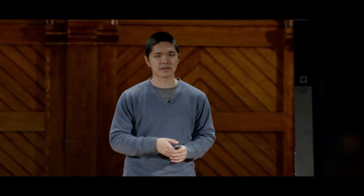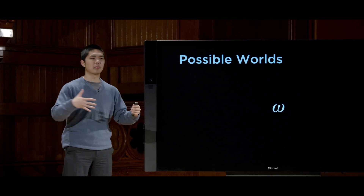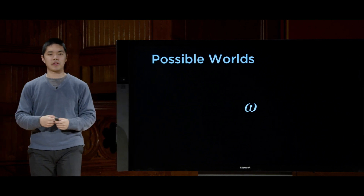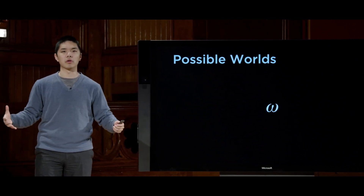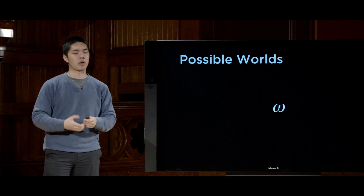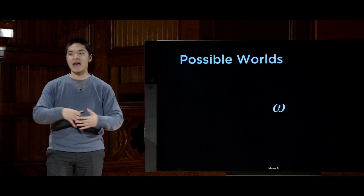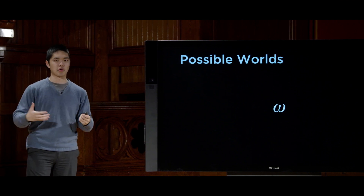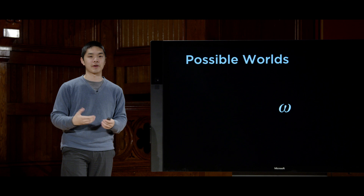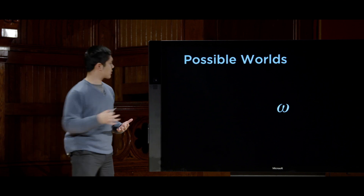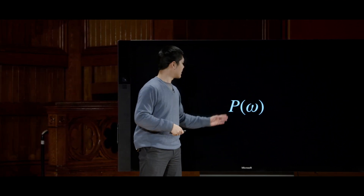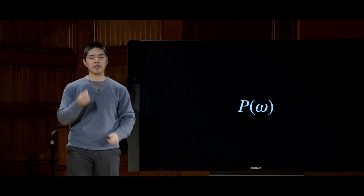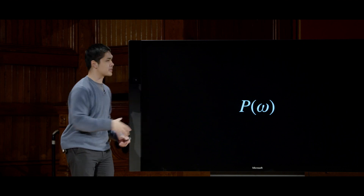Probability ultimately boils down to the idea that there are possible worlds, represented using the Greek letter omega. When I roll a die, there are six possible worlds that could result: I could roll a 1, 2, 3, 4, 5, or 6. Each of those is a possible world, and each has some probability of being true. We represent that probability using the capital letter P, then in parentheses what we want the probability of — so P(omega) is the probability of some possible world omega.